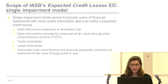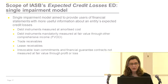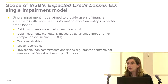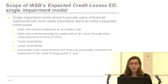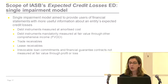The new impairment model will apply to all debt instruments — not only loans booked at amortized cost, but also debt securities measured at fair value through OCI, which is the equivalent of the available-for-sale category. The model will also cover trade receivables, lease receivables, and off-balance-sheet commitments such as financial guarantees and loan commitments. Currently we have different models for all these, but now we will have only one single model.